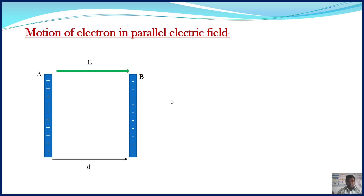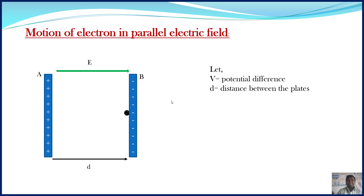Consider an electron at plate B. The initial velocity of this electron is 0. Let V be the potential difference between the plates and d is the distance between the plates. The charge of an electron is represented as e. Whenever a charge is kept in an external electric field, the electric field exerts a force on that charge. Similarly, the electric field E will exert a force on the electron, and that force is given as F equals e into E.